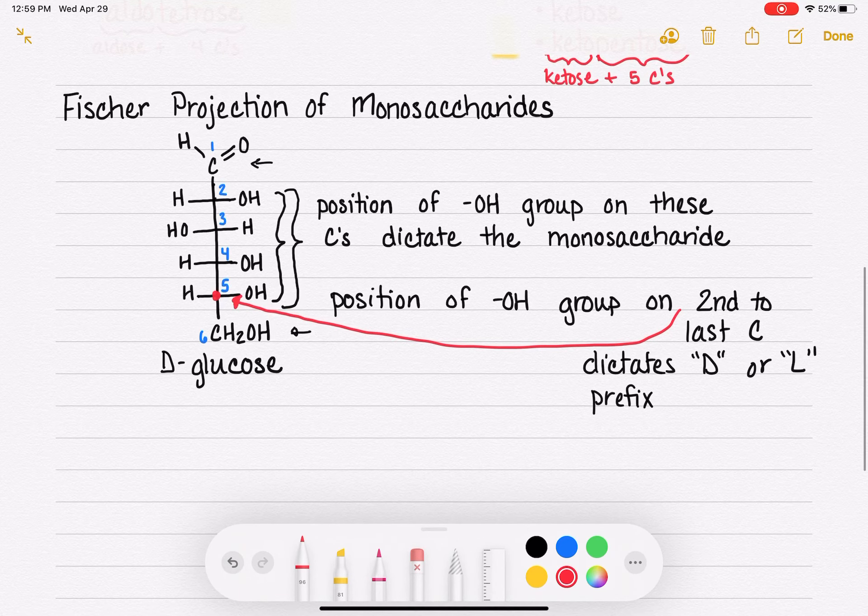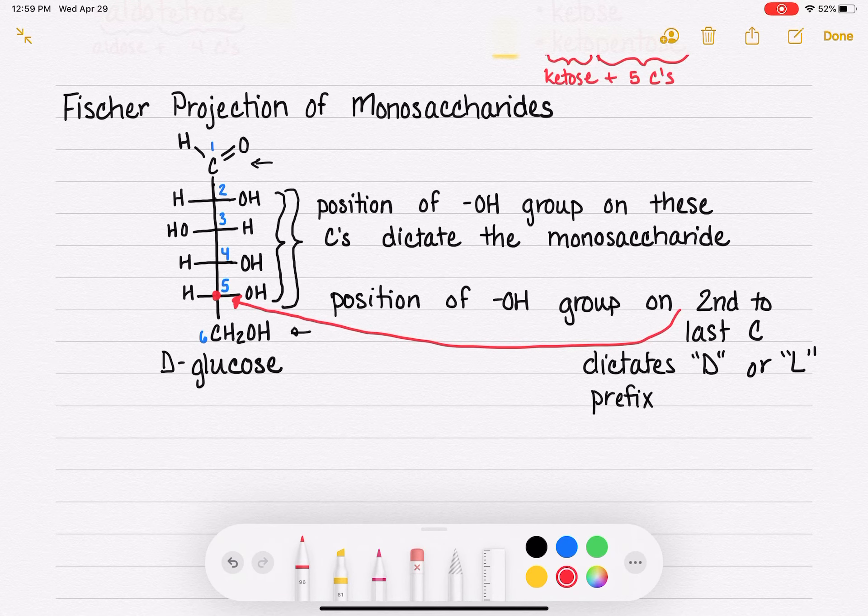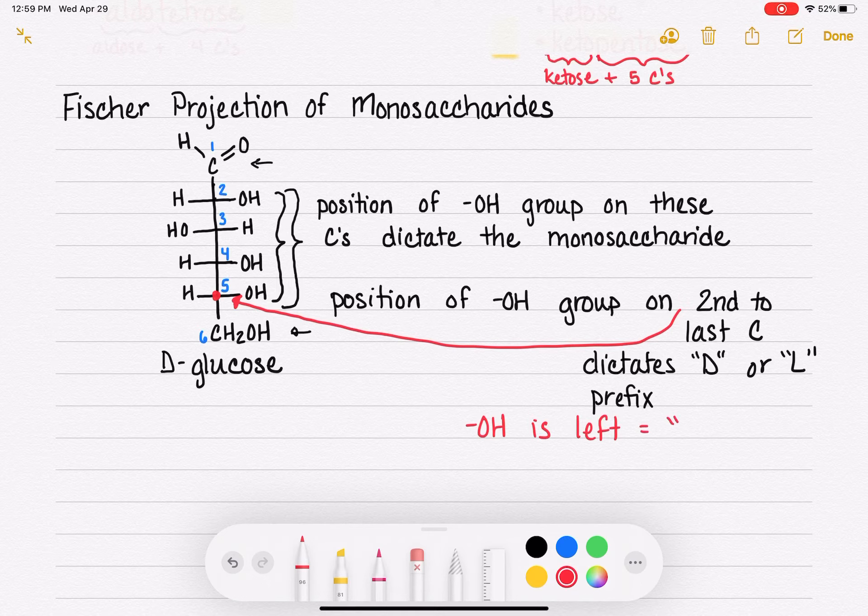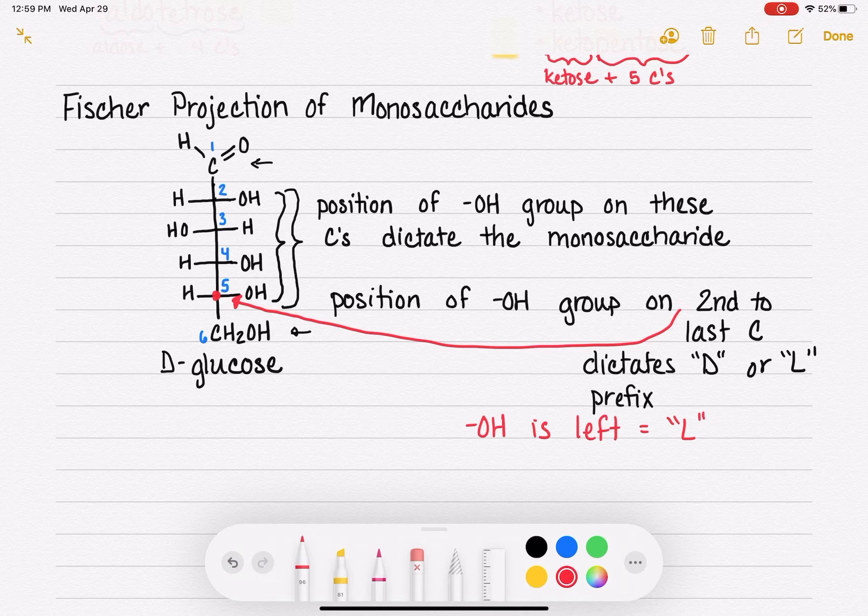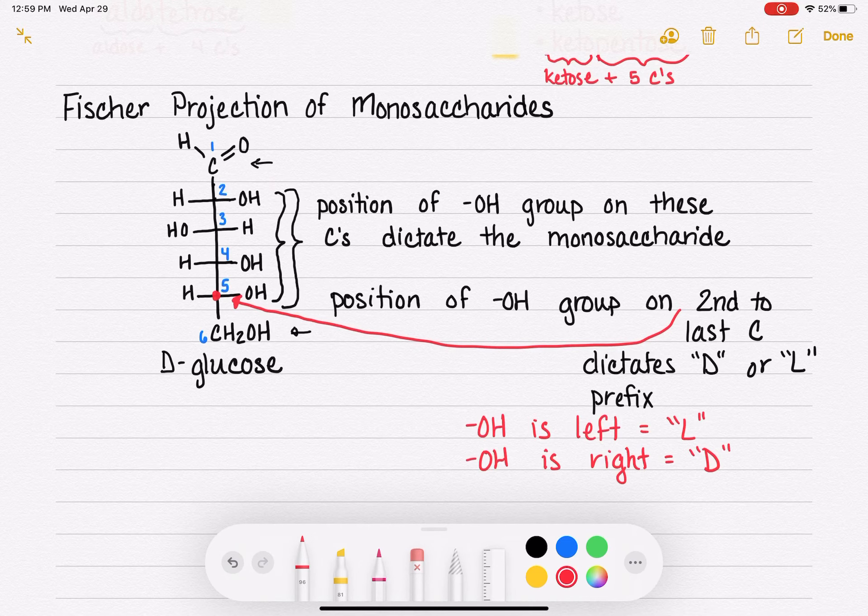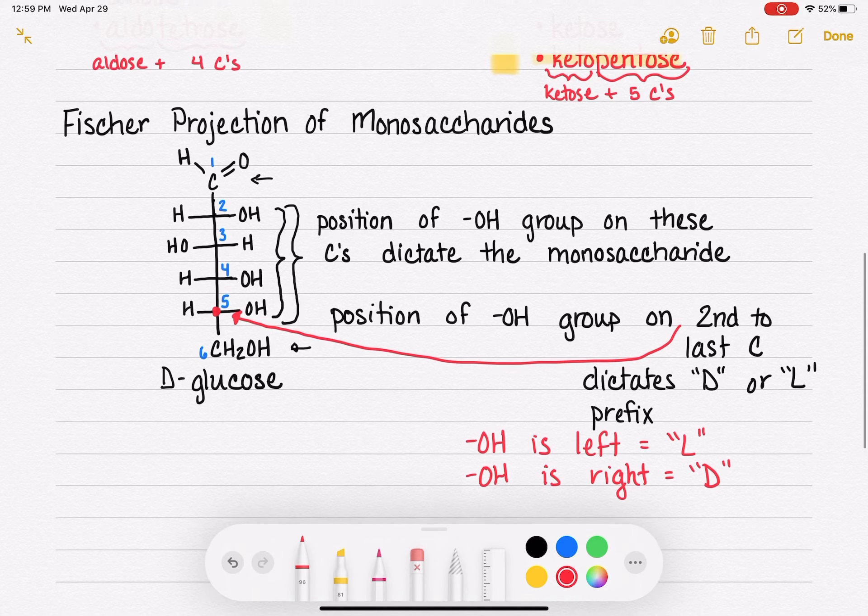So in terms of D versus L, if the OH group is pointing to the left, then we call it the L molecule. And that is awesome because left starts with an L. And if the OH group is to the right, then we call it the D molecule.